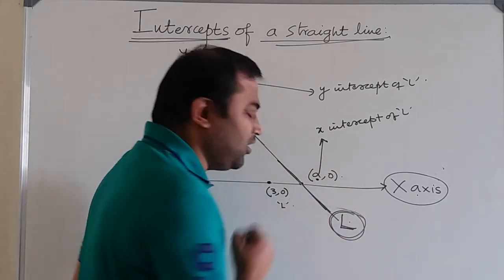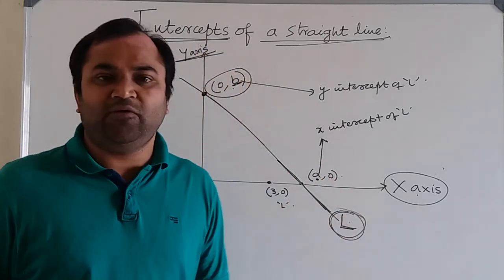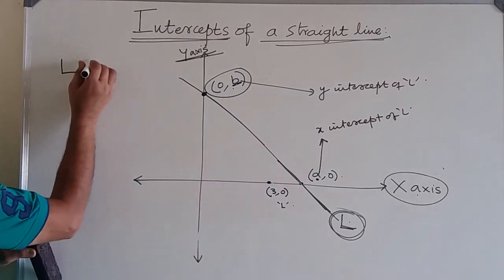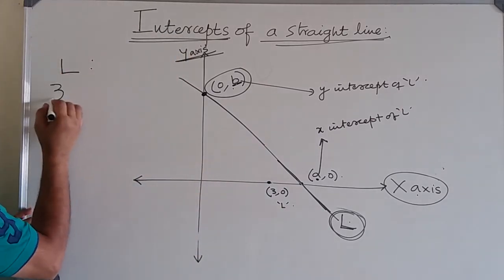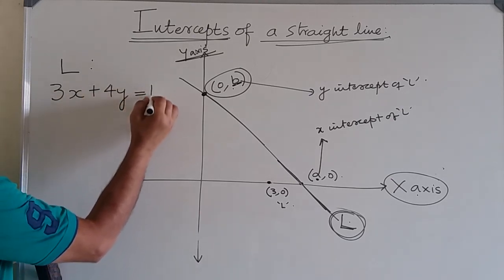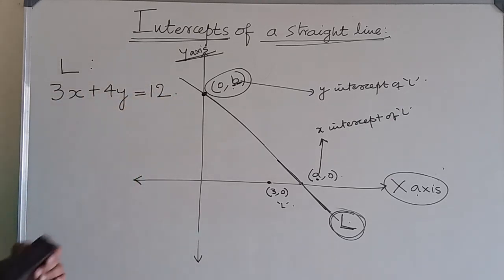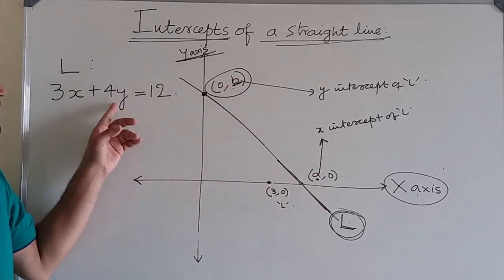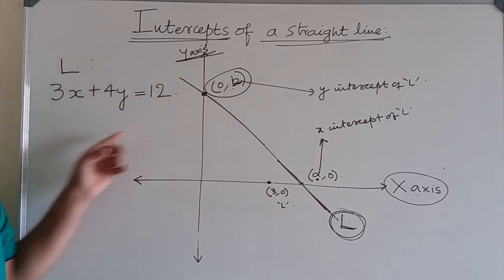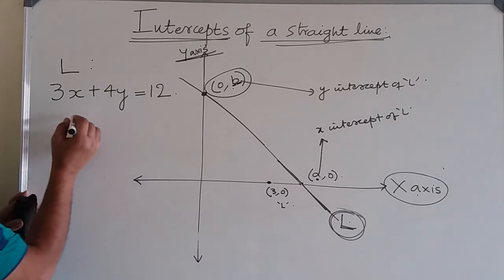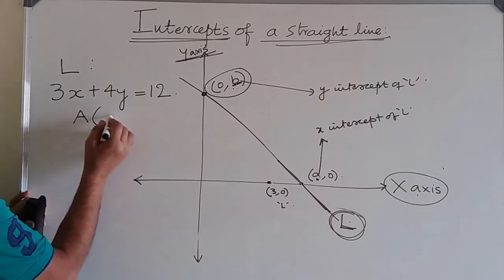Now, coming to the next topic in this video: how to find the x-intercept and y-intercept of a line L whose equation is given. Let me consider the equation of straight line L to be 3x + 4y = 12. If we are asked to find the x-intercept and y-intercept of a line whose equation is given, how do we determine it?